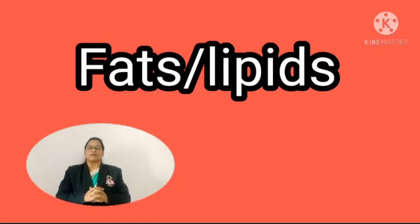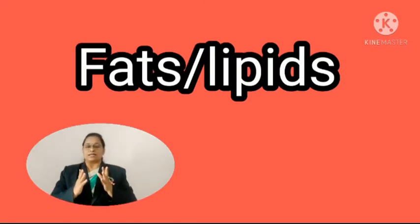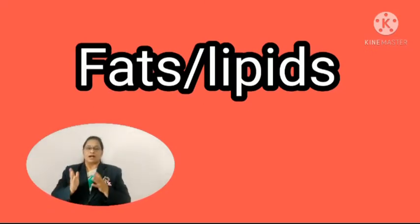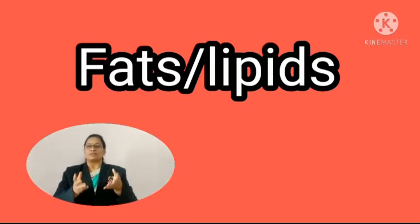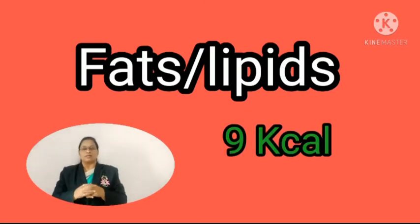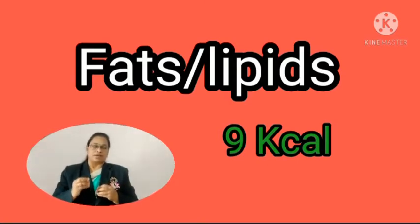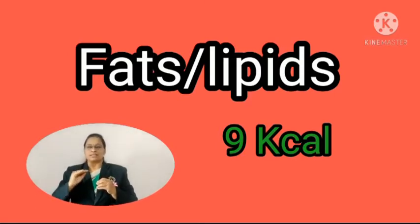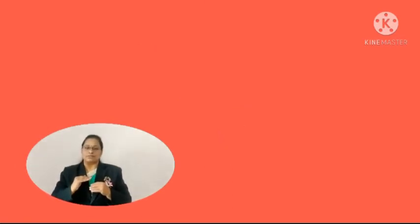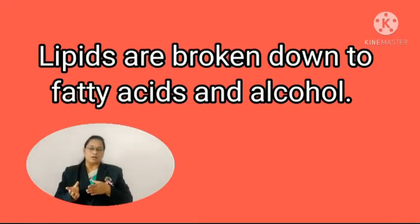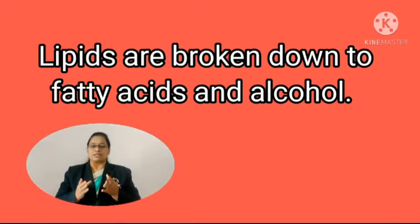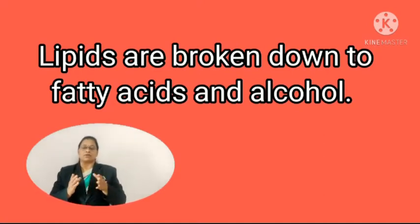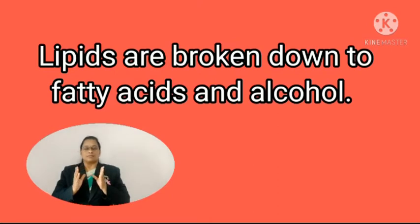The next food constituent is fats or lipids. Fats are obtained from fatty substances. In digestion, fats are converted to fatty acids, which also give us energy — 9 kilocalories of energy per gram of fats or lipids. Fats and lipids are not exactly the same but are in the same category. As a food constituent they are considered the same. When lipids are digested, they give us alcohol and fatty acids.